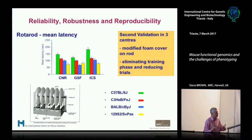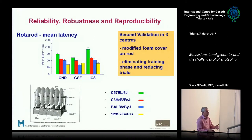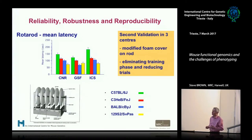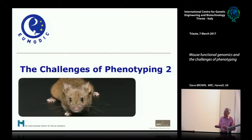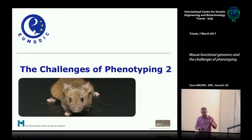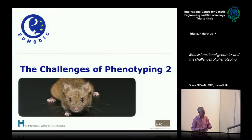This is going on all the time now in the mouse community: how do we generate a suite of phenotyping platforms that can be used in different centers at different times and still give us robust and reproducible data? So we can begin to fill in this matrix, and generate data that ultimately we can use as an underpinning catalogue of biological information where we can understand the genes and genetic networks that underlie physiological systems.